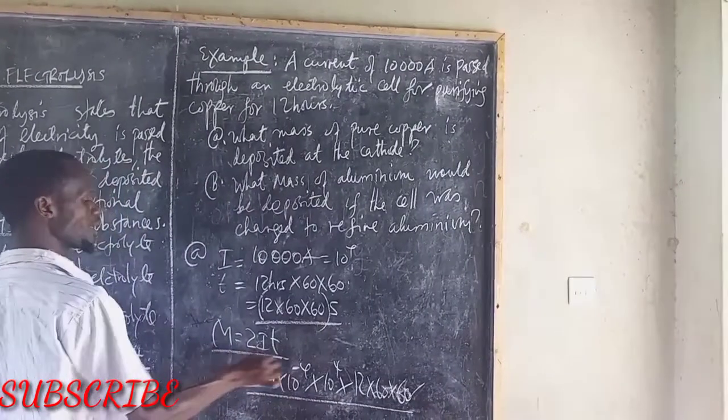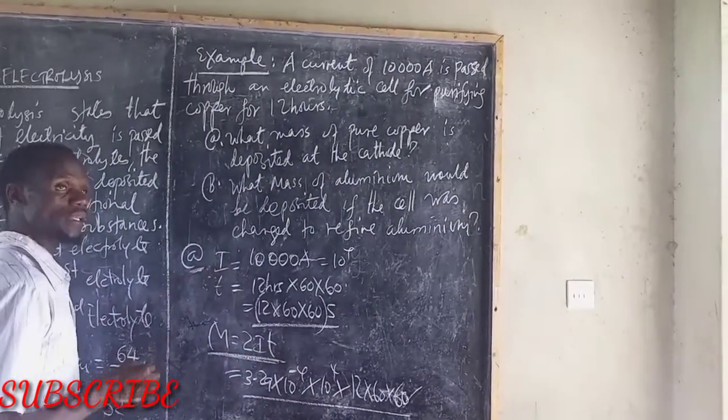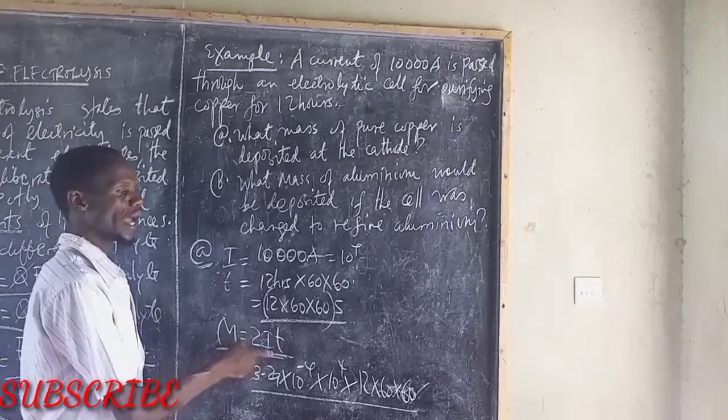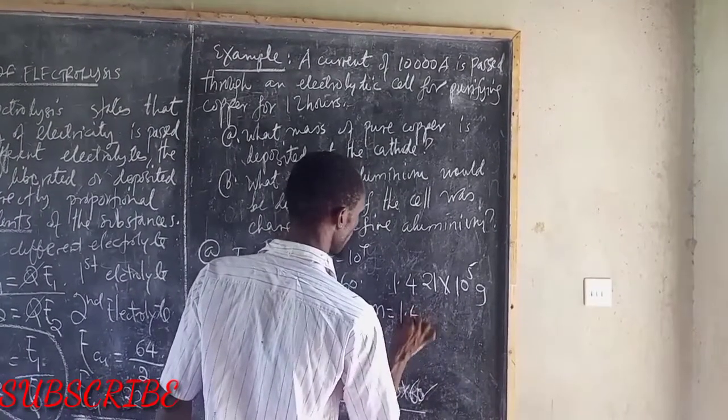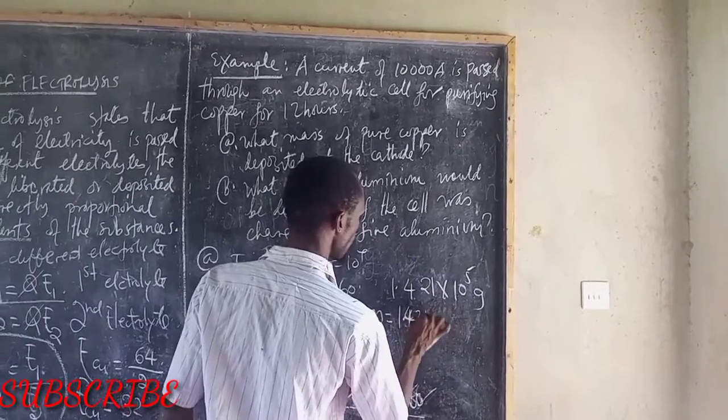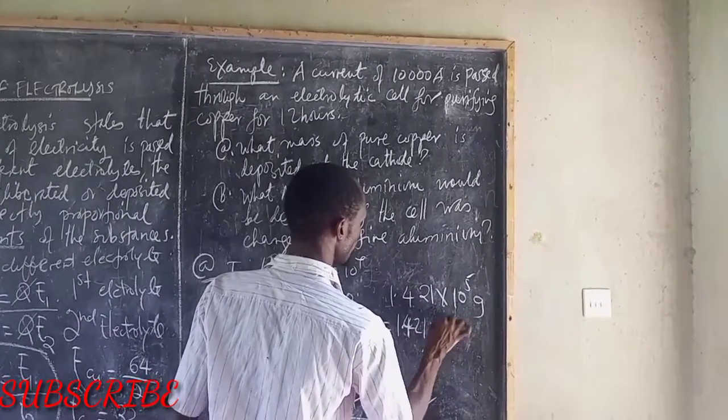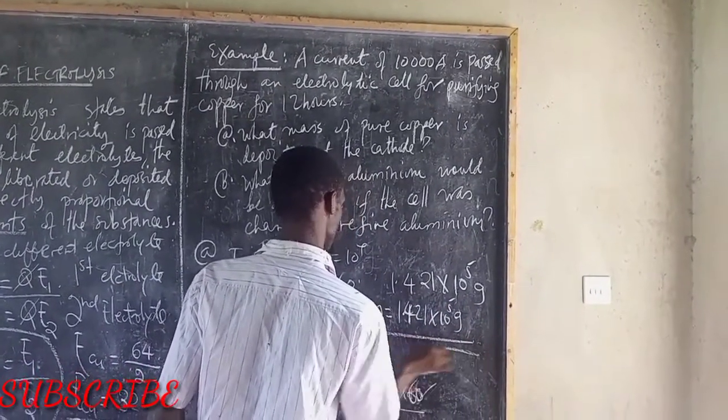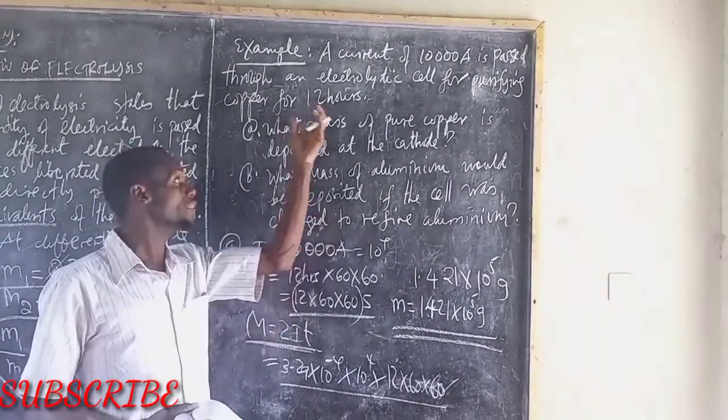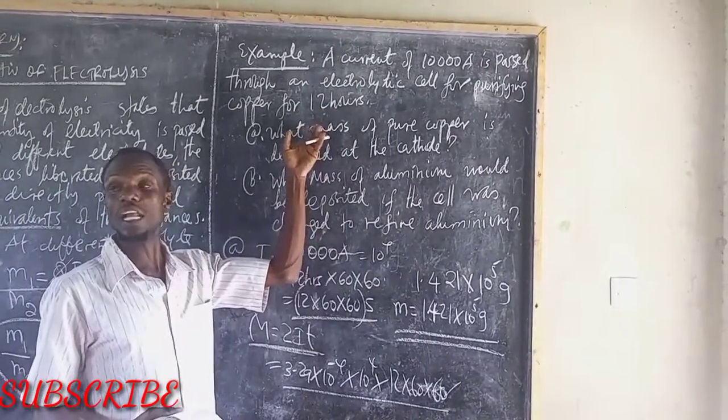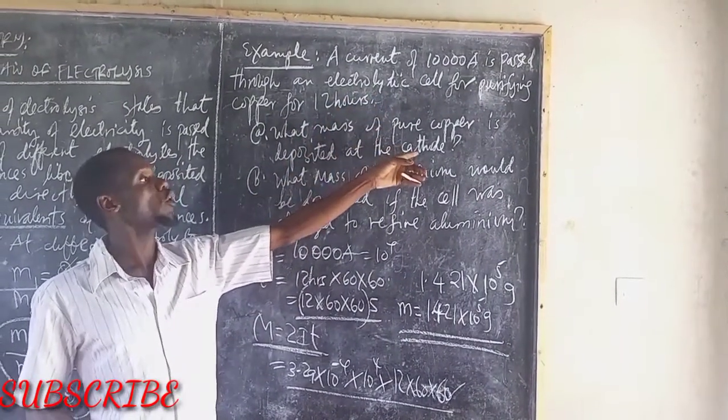So the first question, part A, is all about using Zit. Therefore, mass is equal now to 1.42 times 10 power 5 grams. This is what I have. So I have done this one, part A, because we are only talking about copper.